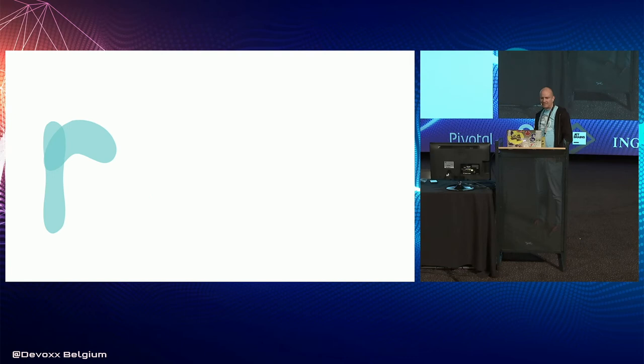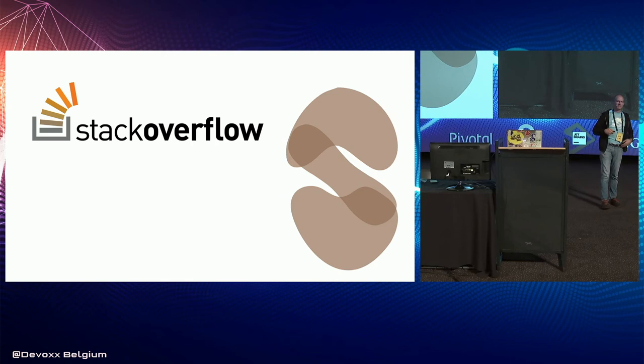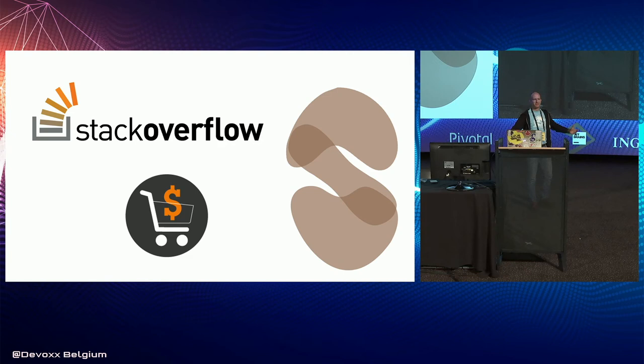R is the .NET version of IntelliJ — ReSharper-driven development. S is for Stack Overflow-driven development — when people just cut and paste stuff out of Stack Overflow without really understanding it. You'll find your codebase littered with comments saying 'I don't really know what this bit does, but it was on Stack Overflow.' And of course sales-driven development — the CEO comes back having made a deal and says 'I sold them this, we can do this, right?' That happened to me a lot in startup life.